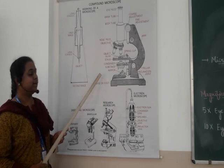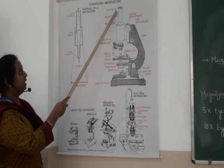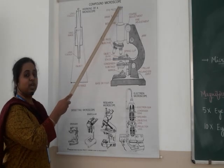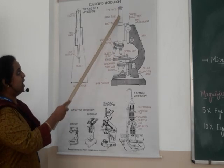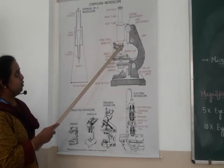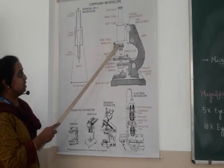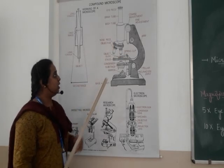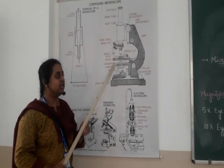This chart shows the diagram of the compound microscope. At the top, you can see the eye piece, which consists of a lens through which we are able to view the object placed on the stage. Below the eye piece is the tube, which continues to join the objective. The nose piece is attached to the objective. In a compound microscope, there can be two to three objectives, which are nothing but lenses.